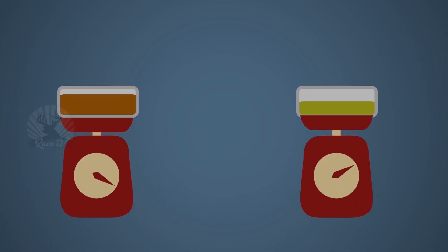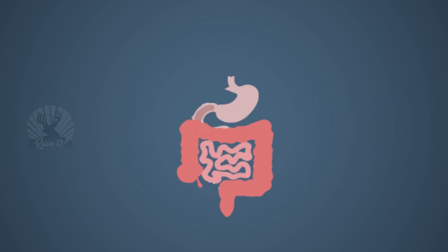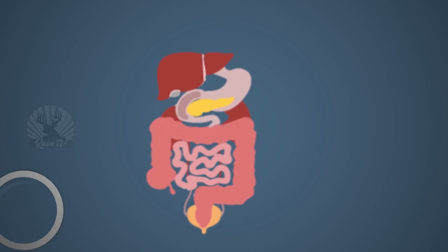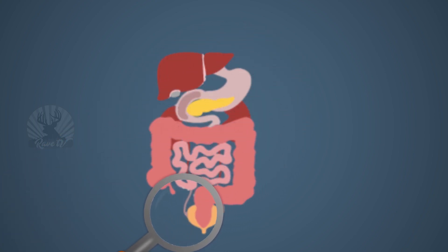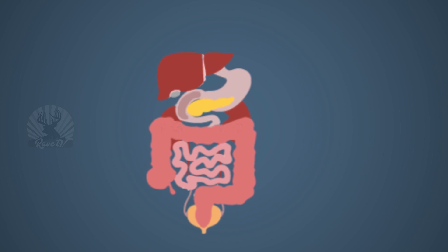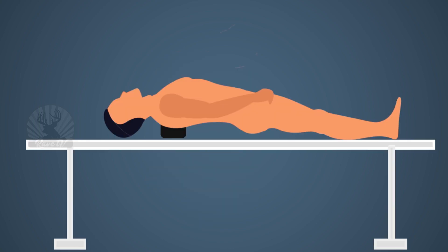The abdomen examination begins with the stomach and intestine contents being examined and weighed. This can be useful to find the cause and time of death — due to the natural passage of food through the bowel during digestion, the emptier the area, the longer the deceased had gone without a meal before death. Injuries to the intestine, spleen, gallbladder, etc. are paid detailed attention.